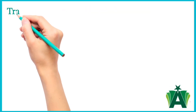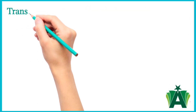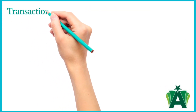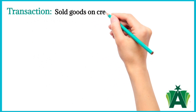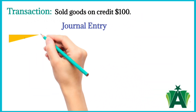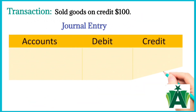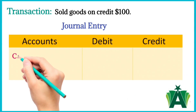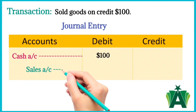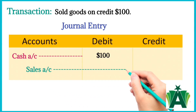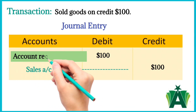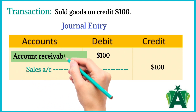Here is an example of a repeated wrong journal entry made by new students. Sold goods on credit $100. The journal entry made by new students: cash account debit, sales account credit. The error in this journal entry is debiting the cash account instead of the accounts receivable account.